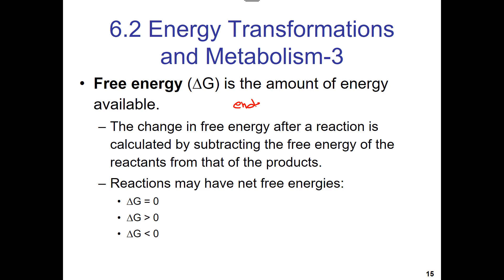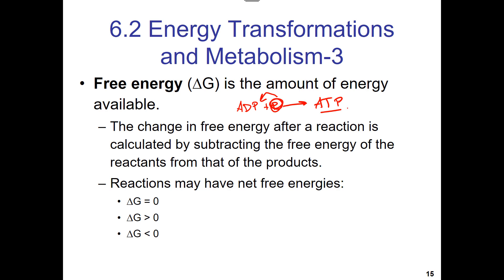We call those kinds of reactions endergonic, because they're absorbing energy. Think of 'endo' like endocytosis — bringing things into the cell. A real-world example is adenosine diphosphate plus phosphate going uphill: we push the phosphate group onto the molecule and yield adenosine triphosphate, a high-energy molecule. ADP is low in energy compared to ATP, so we're going uphill.